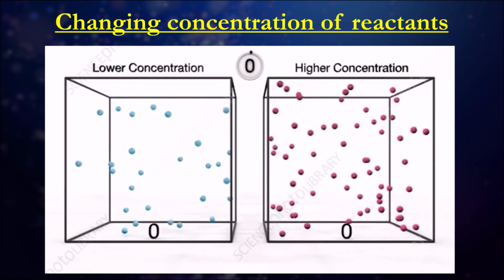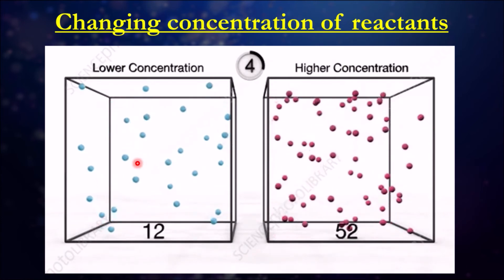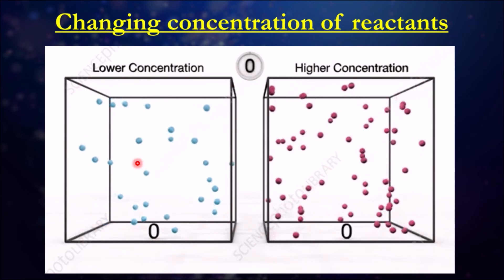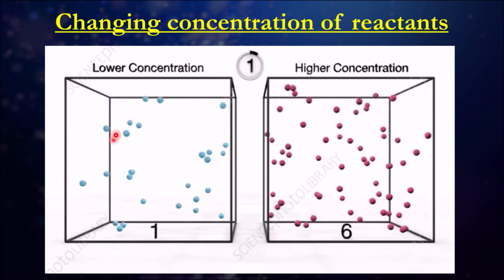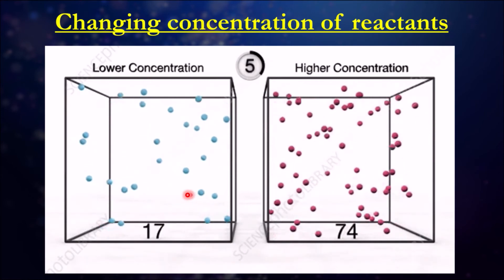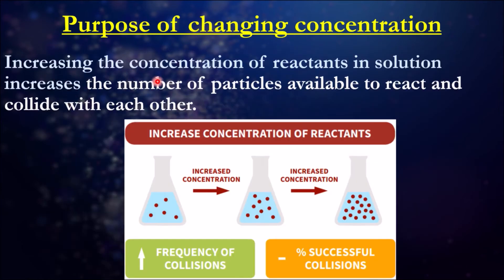The next factor is concentration. According to collision theory, if I have a really low concentration, the likelihood of particles colliding with each other is much lower than if I had a much higher concentration. So by increasing the concentration of my reactants, I can effectively increase the number of available collisions, and so I have a faster chemical reaction.